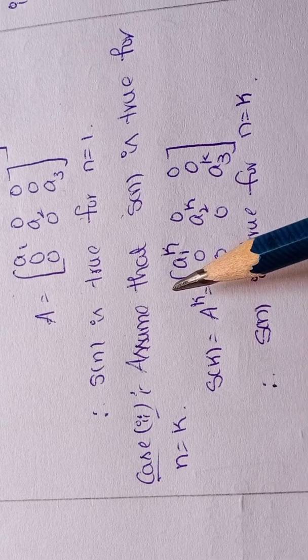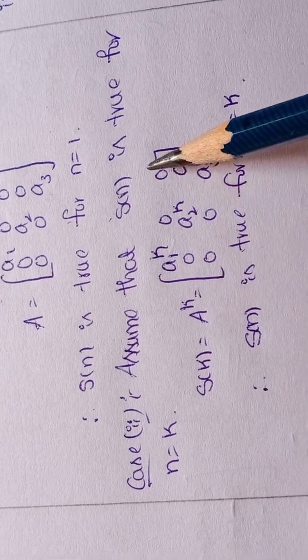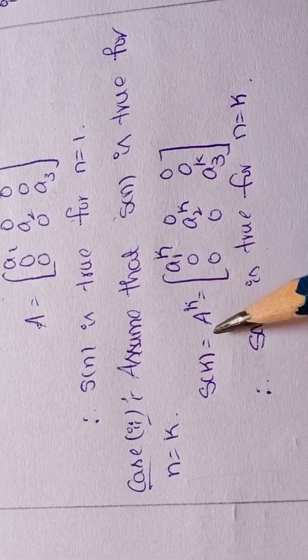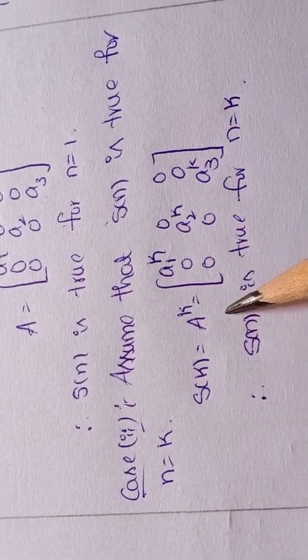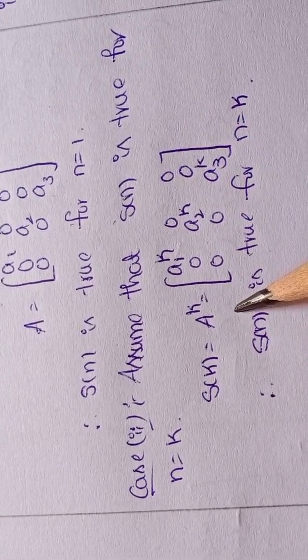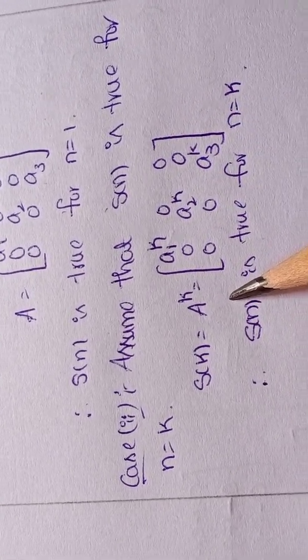Case 2: assume that S of n is true for n equal to k. In the place of n substitute k.